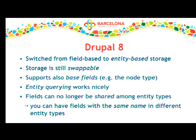As a consequence, we no longer allow fields to be shared across entity types. You cannot have field_tags applying to both a node type and the user entity type. This used to cause problems in Drupal 7 with permissions. We removed that feature, but left the possibility to have fields named the same way attached to different entity types — these are seen by the system as different fields. On the other hand, we are still able to provide the same theming for those because the name is the same.